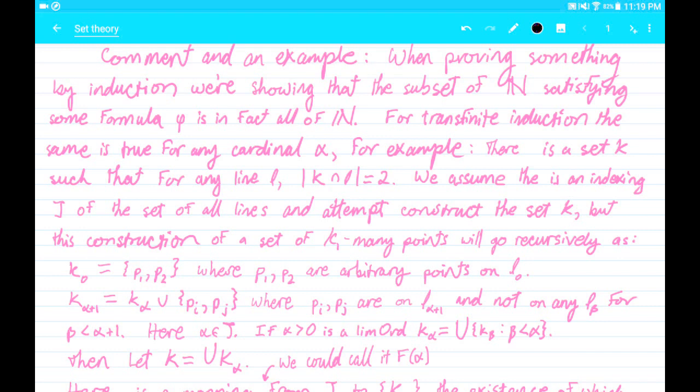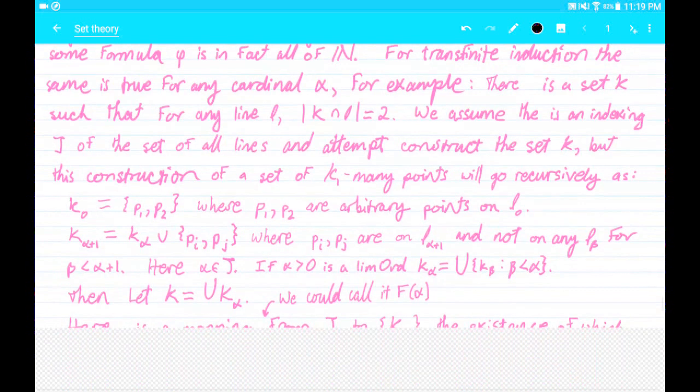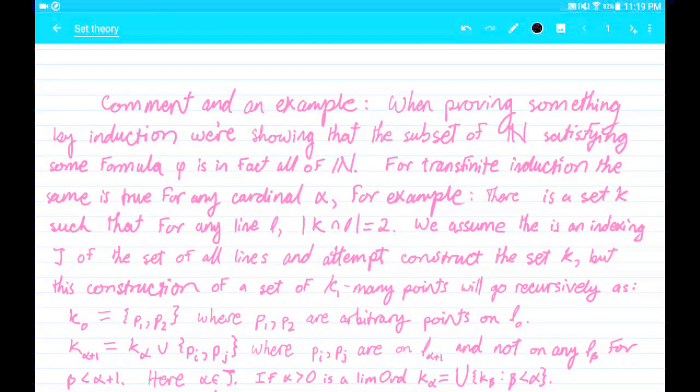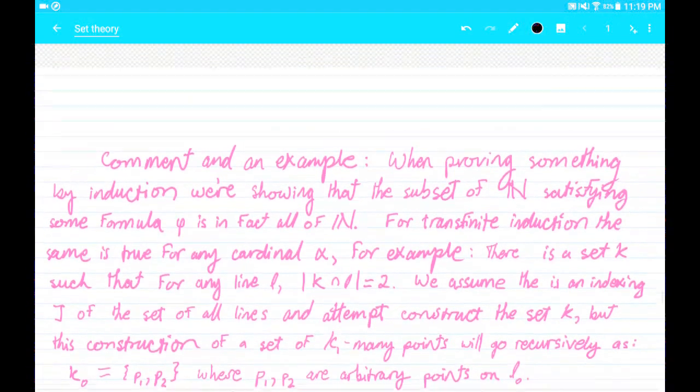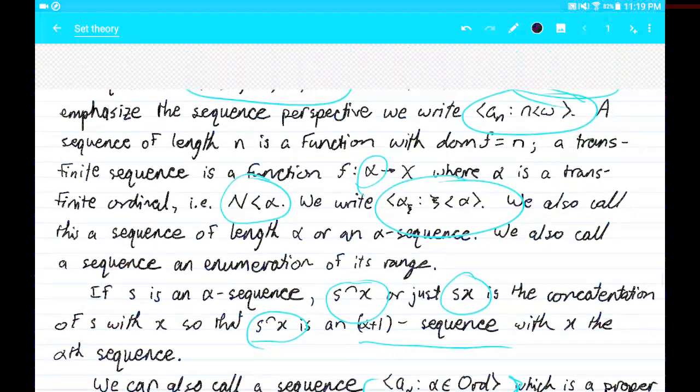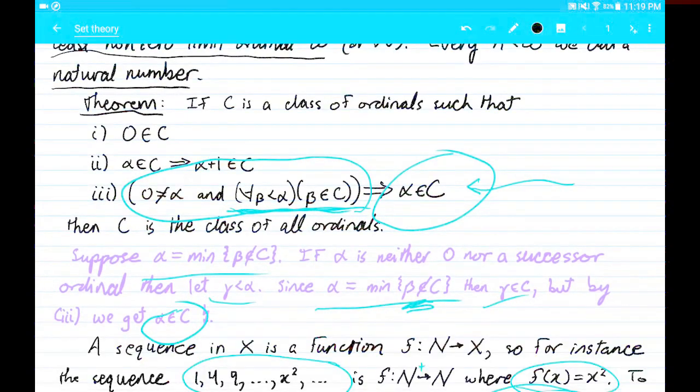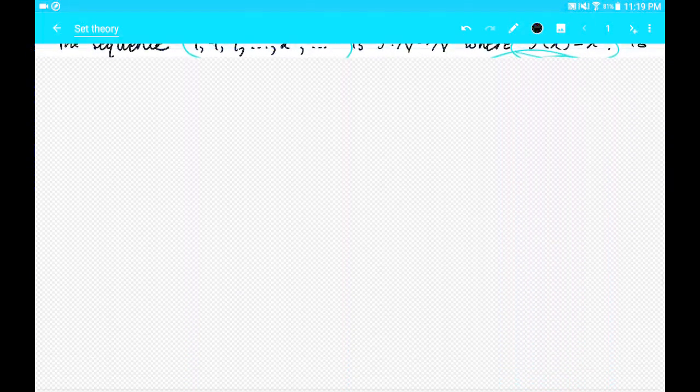That's a comment on transfinite induction and why, when we do it with transfinite induction, you are just replacing n with some other ordinal if you need to have a larger class of things that you want this to hold for. Therefore you have this extra little condition that is needed in case your ordinal is some limit ordinal greater than n.